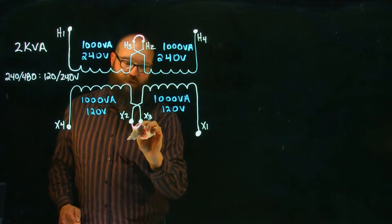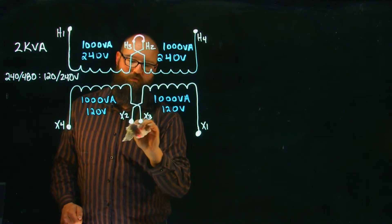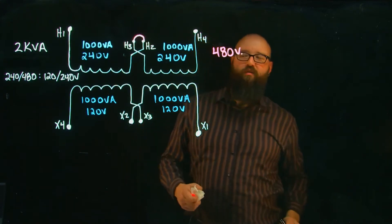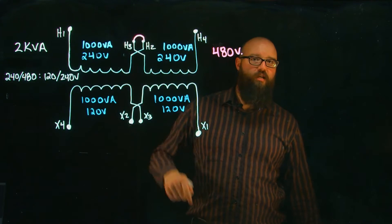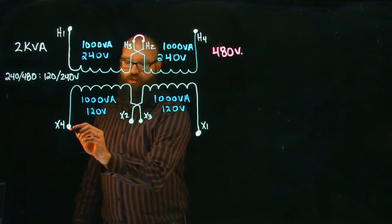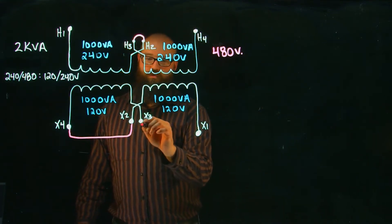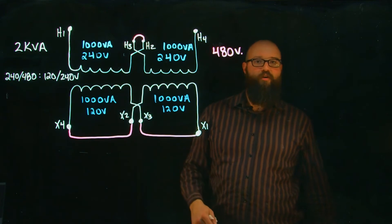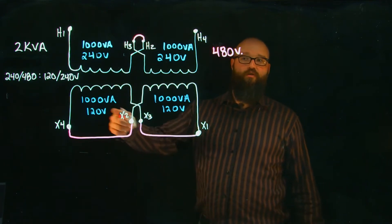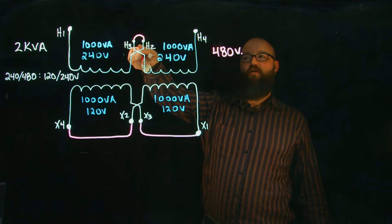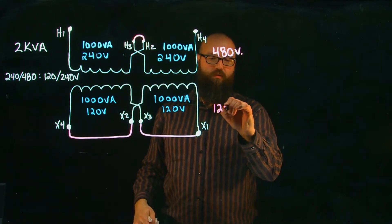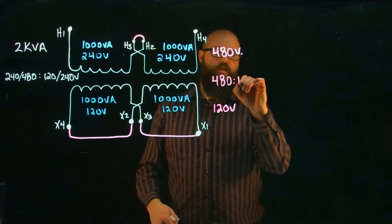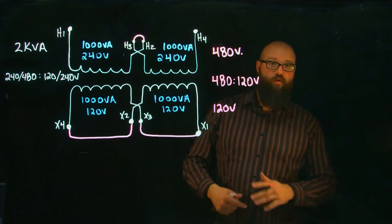Now we'll remove the series jumper on the secondary but leave the series jumper on the primary, so we still have 480 volts — 240 plus 240. On the secondary side we're going to parallel the coils instead. When two equal voltages are paralleled, the output voltage remains the same, so we get 480 input and 120 output — a 480 step-down to 120 volt transformer.